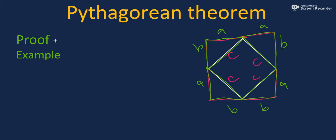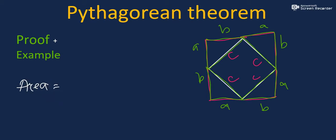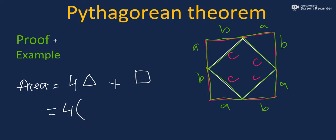There is a correction — the labeling is A, B, A, B, A, B, A, B all around. Now, the area of the bigger square equals the area of the inner square plus the area of the four triangles. You know that the area of one triangle is one-half AB, since the two legs are A and B.